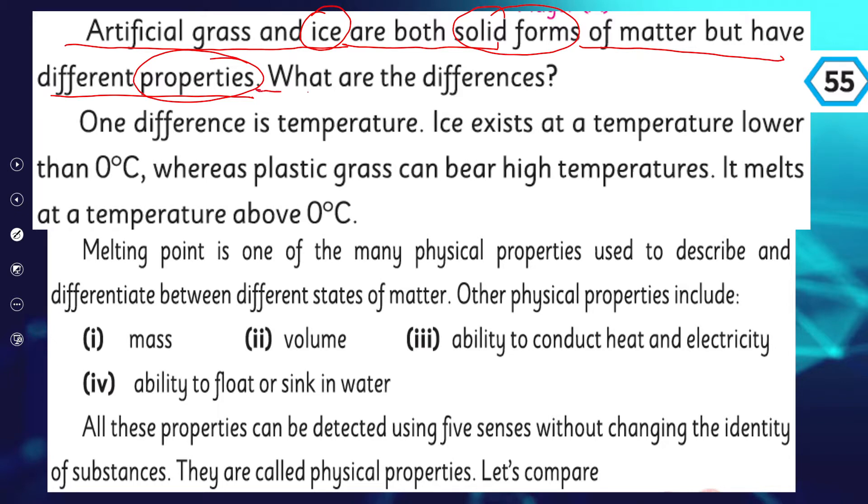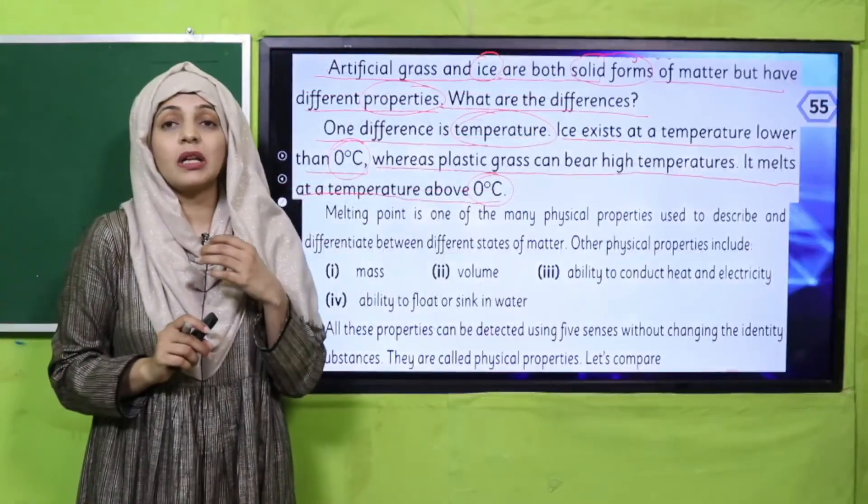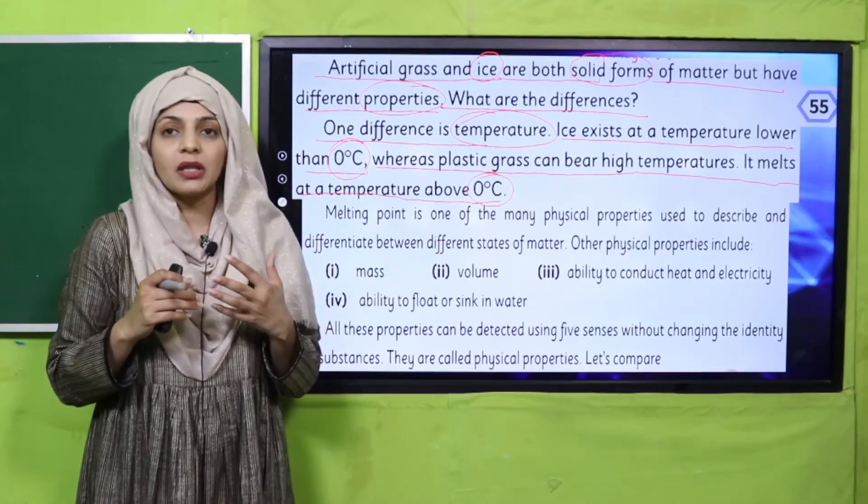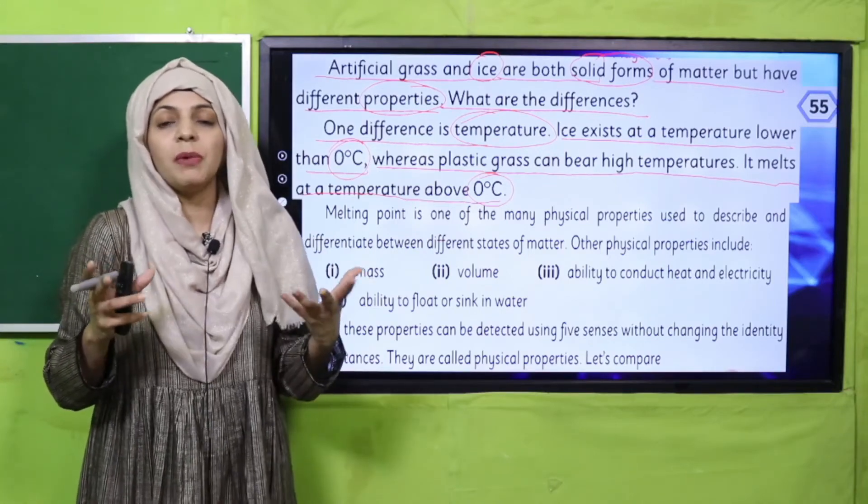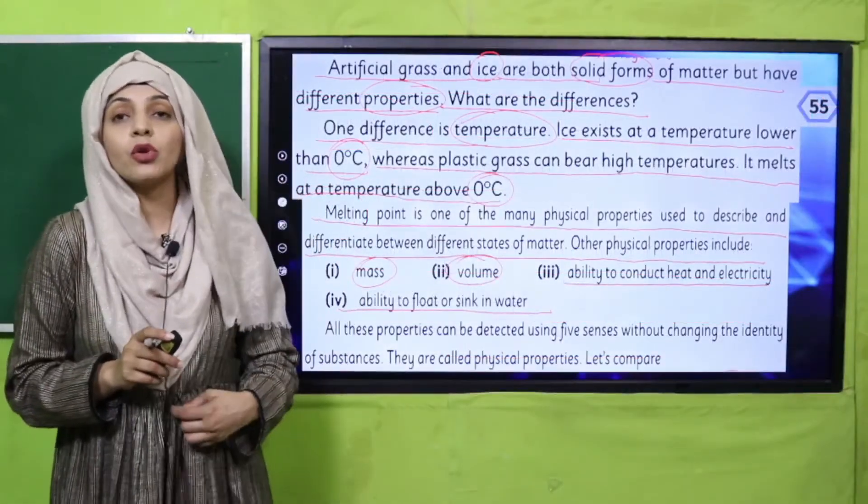Artificial grass and ice are both solid forms of matter but have different properties. What are the differences? One difference is temperature. Ice exists at a temperature lower than zero degrees Celsius whereas plastic grass can bear high temperatures. It melts at a temperature above zero degrees Celsius. Melting point is one of the many physical properties used to describe and differentiate between different states of matter. Other physical properties include mass, volume, ability to conduct heat and electricity, and ability to float or sink in water.